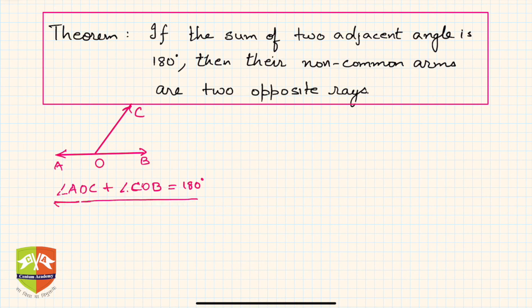Now we have to prove the converse of it. The converse states that if the sum of two adjacent angles is 180 degrees — that is given — then you have to prove that the non-common arms are two opposite rays.